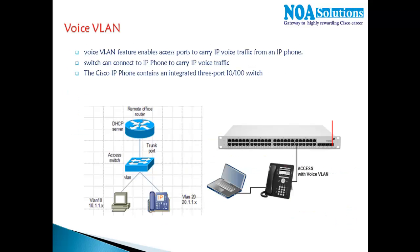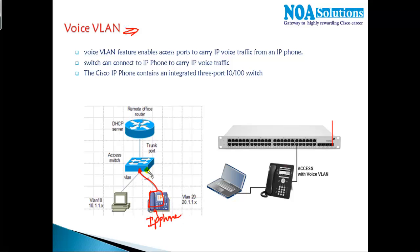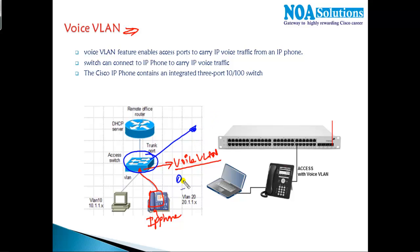Next, we'll talk about voice VLANs. In a production network, an IP phone connected to a switch sends voice signals through that switch. For IP phones, we configure a separate VLAN called the voice VLAN, which carries only voice traffic. In this section we'll see how to create a voice VLAN, how to separate it from data traffic, and what specific configurations are needed.